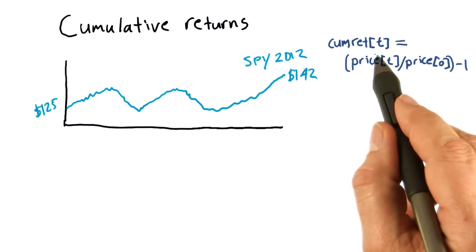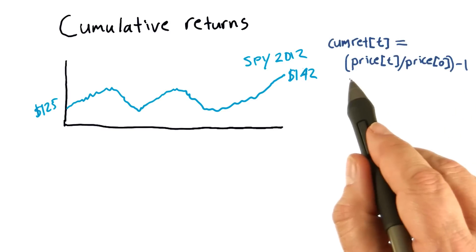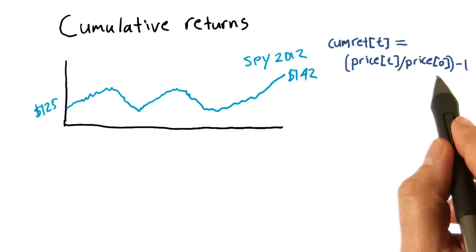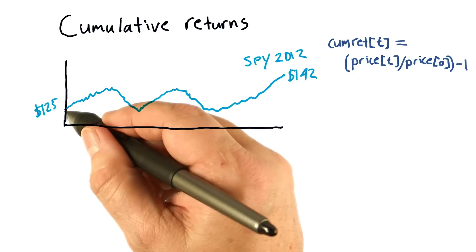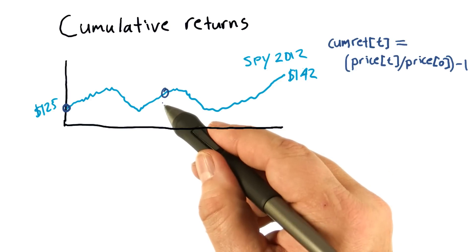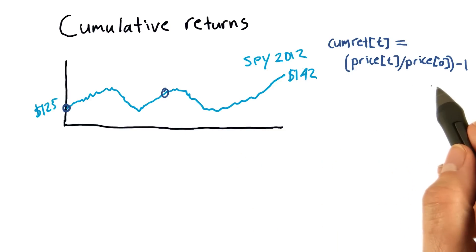The cumulative return for a particular day T is just today's price divided by the price at the beginning. So price of zero is over here, and the price of any particular day would be here. And we can calculate the value like this.